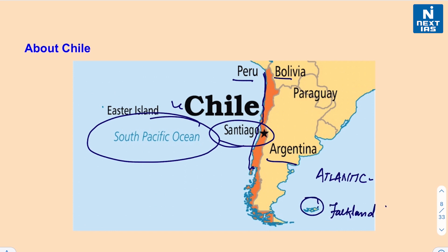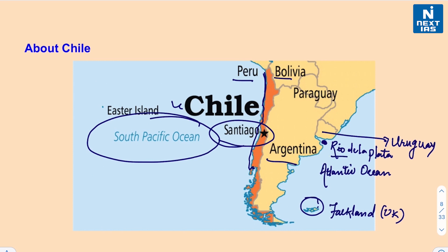Here we have the Falkland Islands that belong to the UK. This is a country called Uruguay, and here we have a body of water known as Rio de la Plata. Some people consider the Rio de la Plata region as a river, but some geographers call it a large bay or marginal sea of the Atlantic Ocean. If considered a river, it would be the widest river in the world with a maximum width of about 220 kilometers and a total surface area of about 35,000 square kilometers.